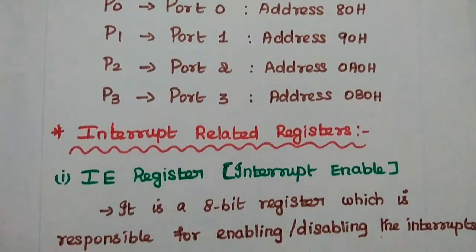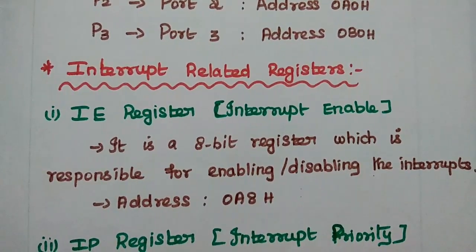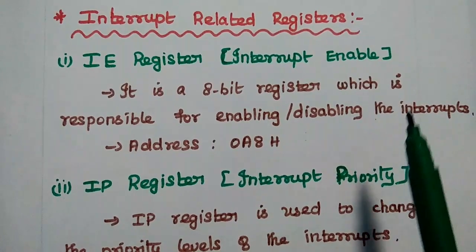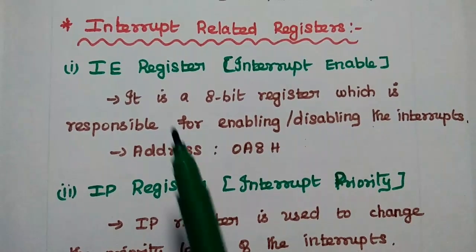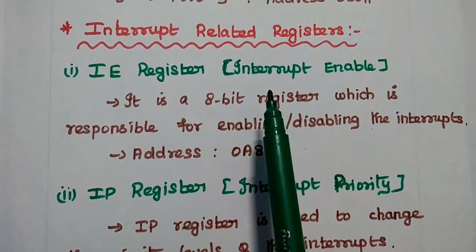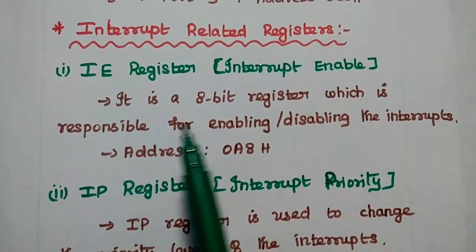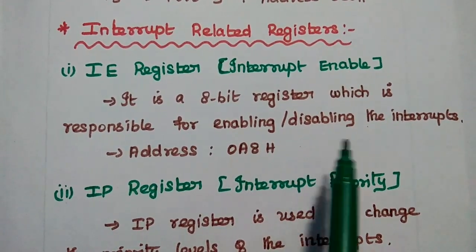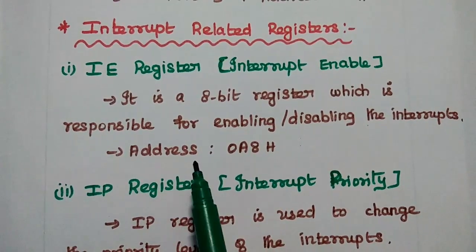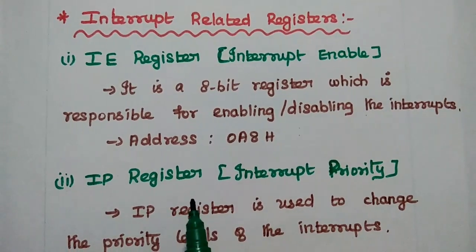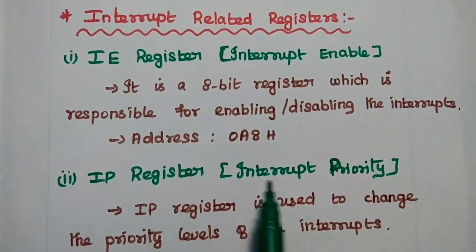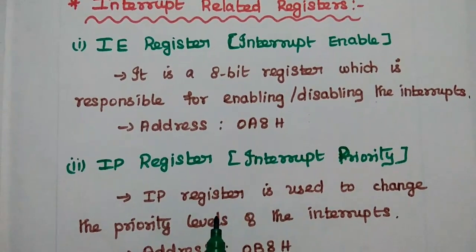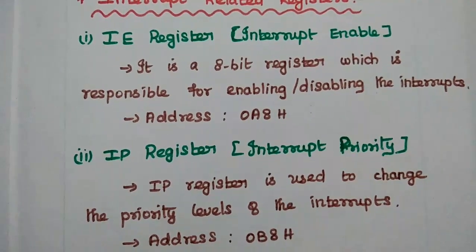The next category is interrupt-related registers. There are two important registers for interrupts. The first is the IE register (interrupt enable register). It is an 8-bit special function register responsible for enabling or disabling the interrupts in AT51. Its address is 0A8H. The next is the IP register (interrupt priority register), which controls interrupt priority. Its address is 0B8H.